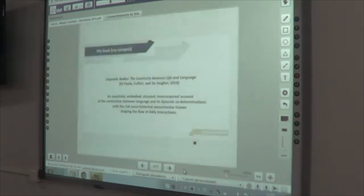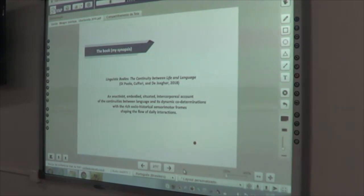So, this is, if I were to put it in a nutshell, my synopsis of your book. In my view, what you set forth is an enactivist, embodied, situated, inter-corporeal account of the continuities between language and dynamic co-determinations with the rich socio-historical sensory-motor frames shaping the flow of daily interactions. Having tasked me with the mission to write a blurb for the back cover, this is what I would have produced. I hope my brief summary of your volume is at least partially sensible and thus merits your work.